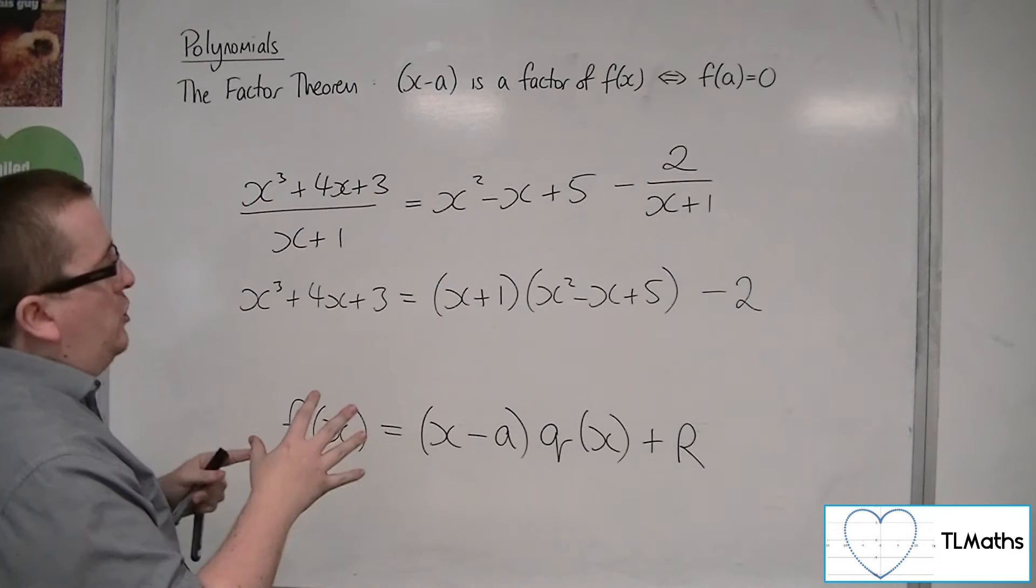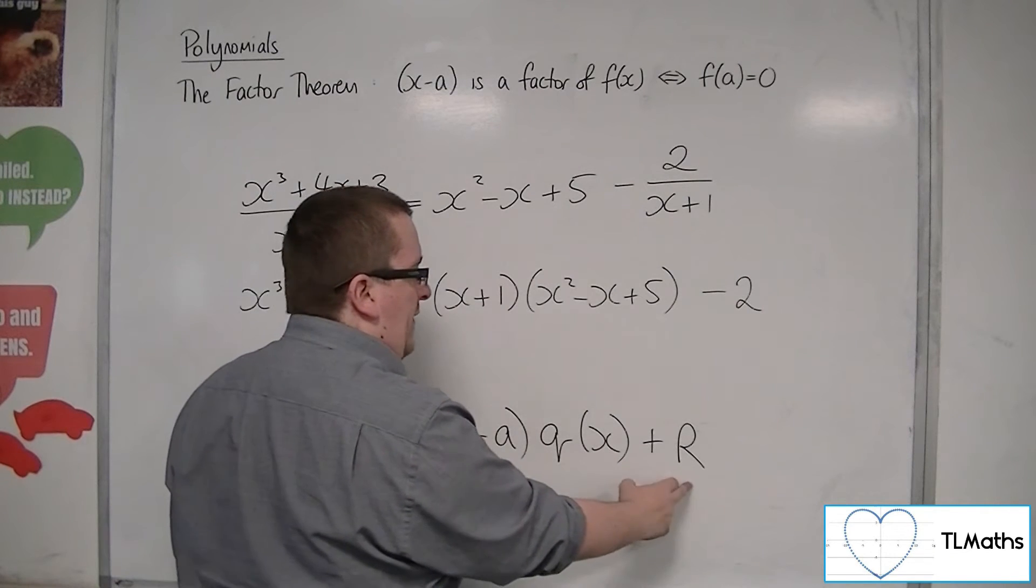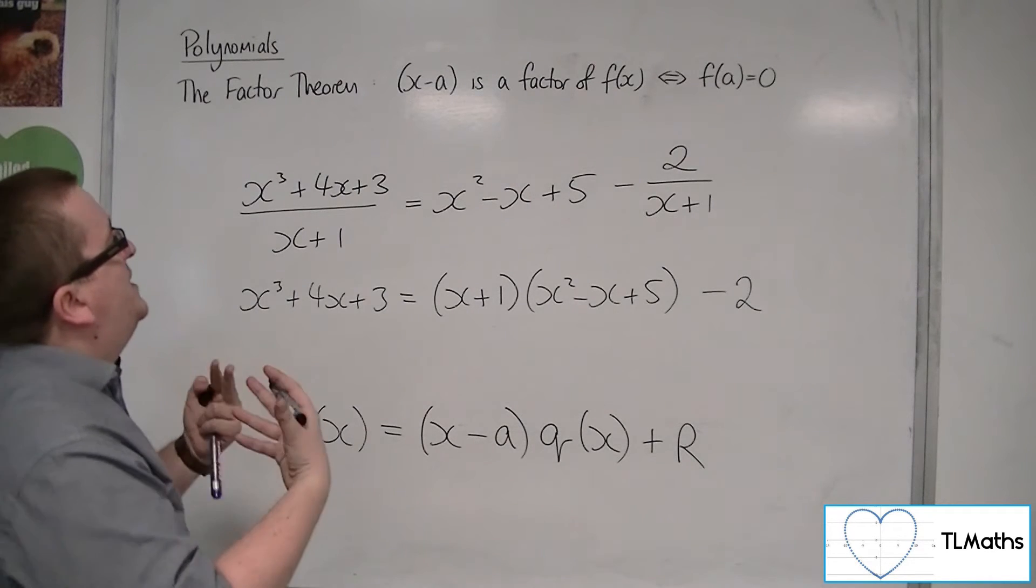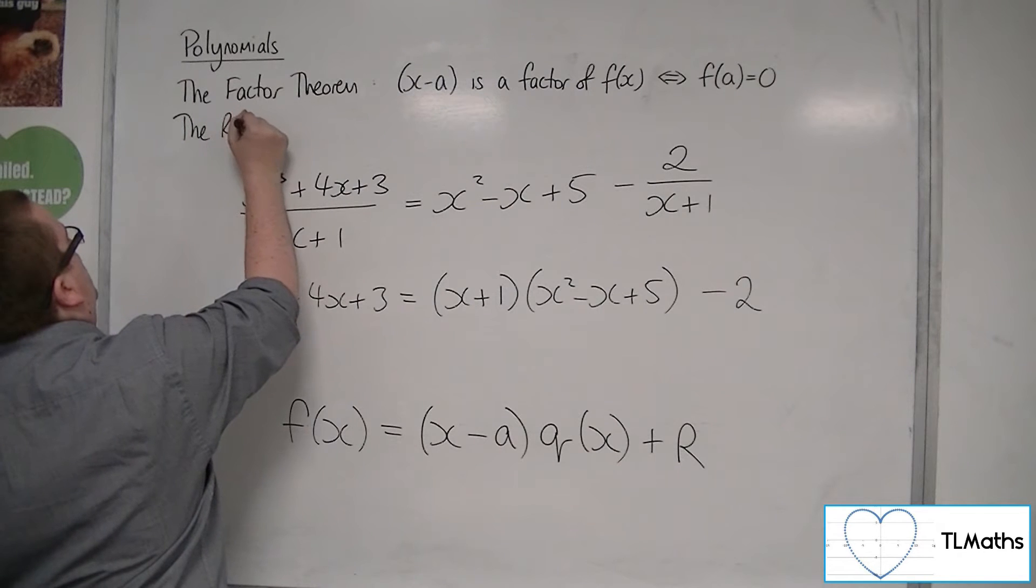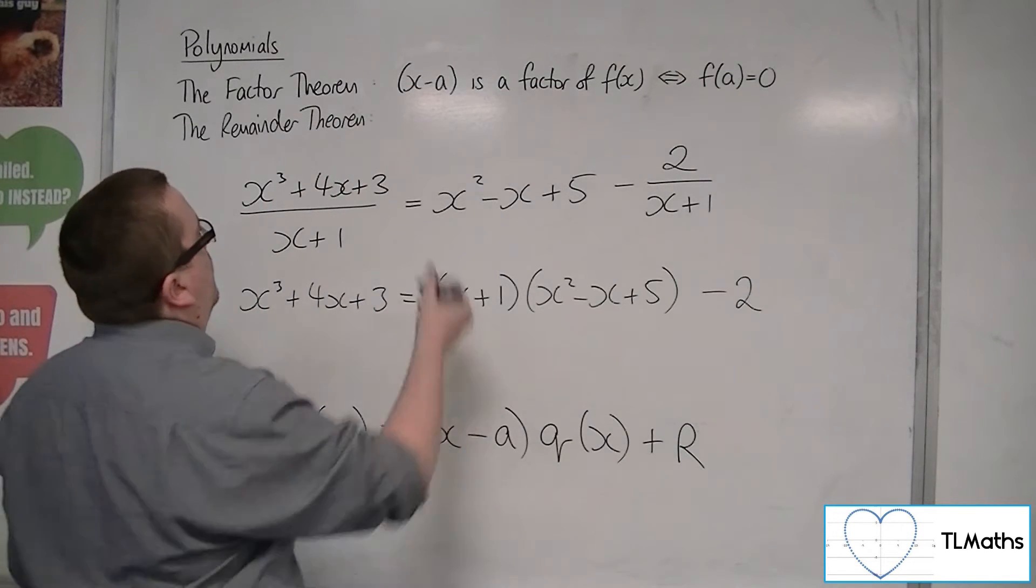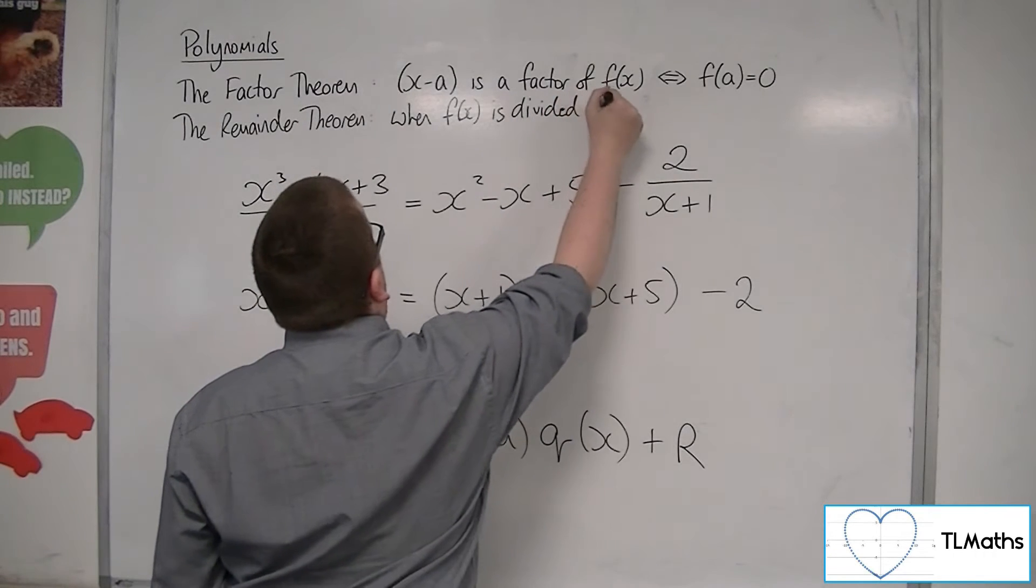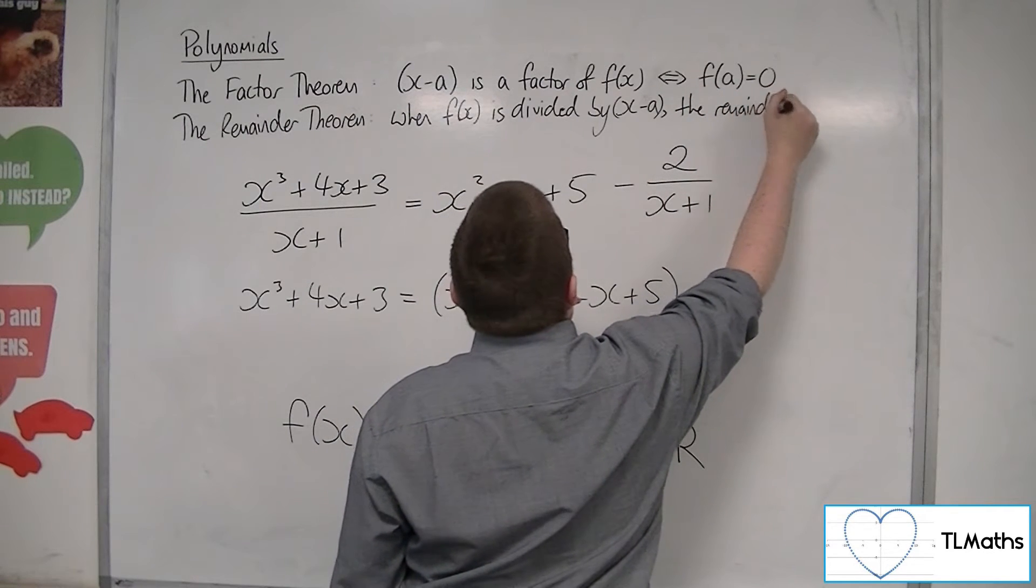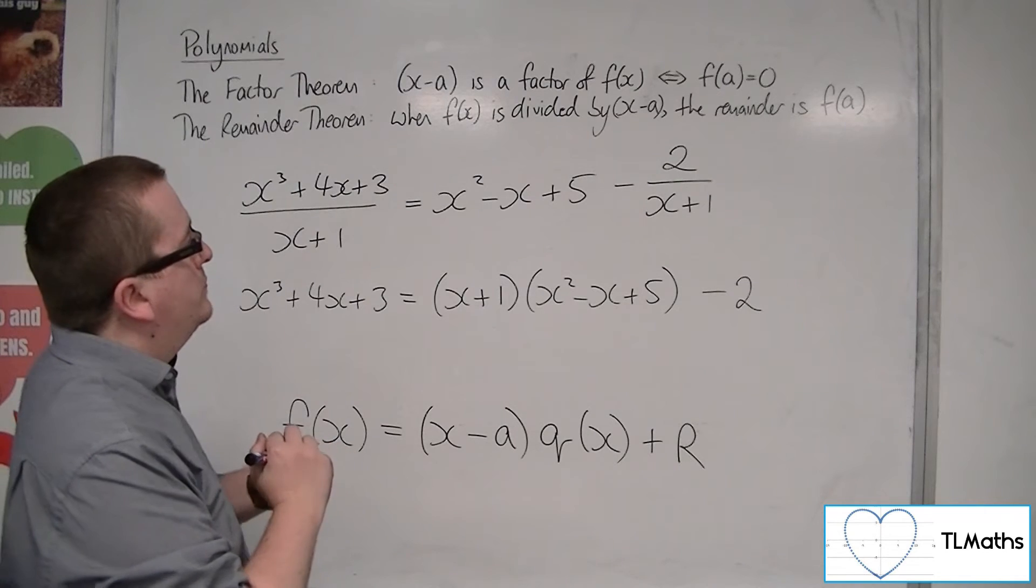Now, what this is actually doing is it's saying that when I divide through by x minus a, a linear function, I can get this remainder appearing. And that's what brings about something called the remainder theorem. So in order to really understand the factor theorem, we must see the remainder theorem as well. So the remainder theorem kind of works behind the scenes. The remainder theorem says that when f of x is divided by x minus a, the remainder is f of a.